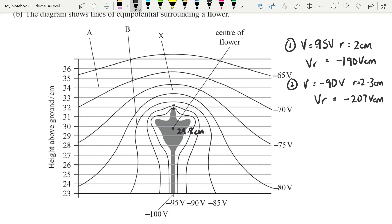Just one more. So minus 85. That looks to be at about 32.5. So I'm going to call R at 2.7 centimeters, making Vr minus 229.5 volt centimeters. And I think that confirms it. And of course, you would have to write this at the bottom of the question, since the value for Vr is not constant. It is not a radial field above the flower.